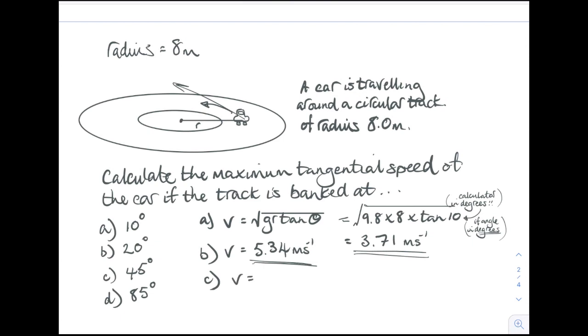If you double the angle, you don't double the tangential speed. 45 degrees is 8.85, and then when we go up to 85 degrees—